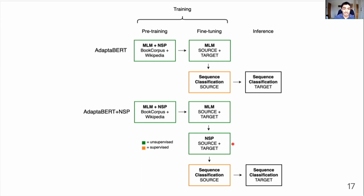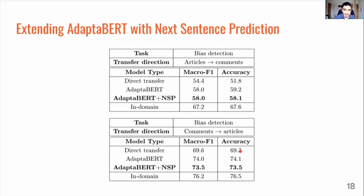This is the architecture we propose: compared to standard AdapterBERT we add an extra NSP stage, again performing NSP on a combination of the source and target domain. Evaluating our extended version of AdapterBERT for the same task, our hypothesis hasn't actually been validated — we get no performance benefits in the articles-to-comments case and there's actually very small performance deterioration in the comments-to-articles case.